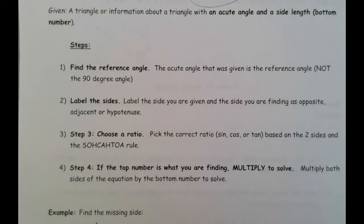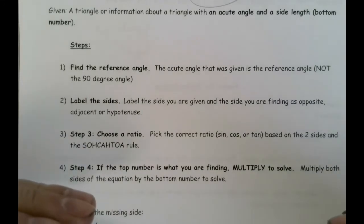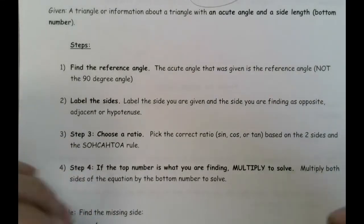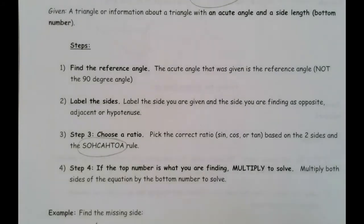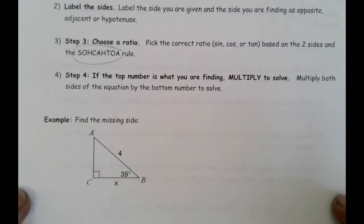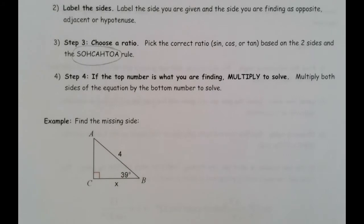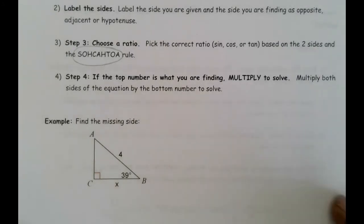Usually when we have an angle and we've got a side, there's another side that we're looking for. We look at the opposite, adjacent, hypotenuse, identify the one that we're given and the one that we want, and that tells us which trig function to use. Once we've got that, we're going to use multiplication to finish the problem — it's sort of like cross-multiplication, but because of what we're looking for, we don't actually have to do the division part.